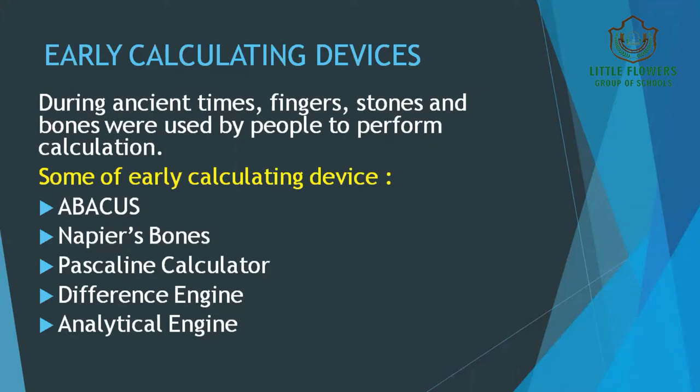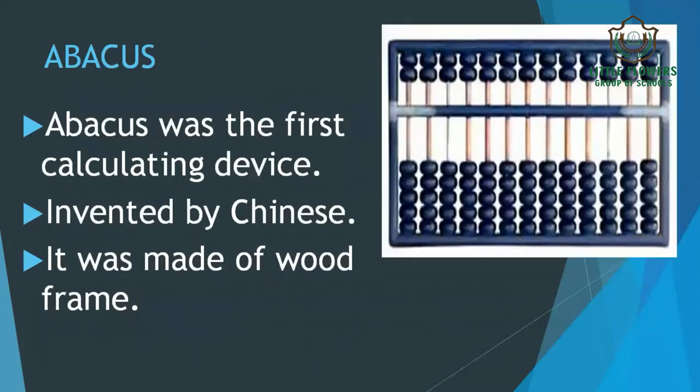First of all, we are going to talk about the Abacus. Abacus was the first calculating device, which was invented by the Chinese. It was made up of a wooden frame with rods, and every rod had a specific number of beads. It was the first calculating device ever used. It helped merchants and traders to count the products they sold or bought, and also helped people to easily add, subtract, multiply, or divide.